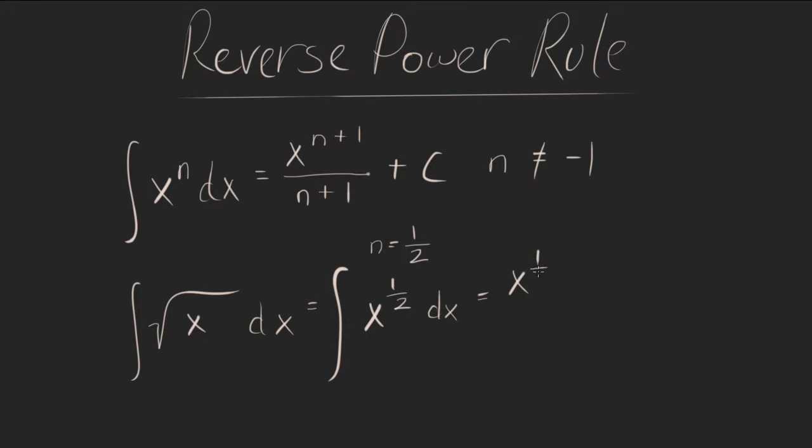So we have one half plus one over one half plus one. And I prefer to write in decimals. You can write this in fractions. In fractions, it would look like this. Simplified, it would be x to the three halves over three halves. And to simplify this, we can just take the reciprocal and multiply it.